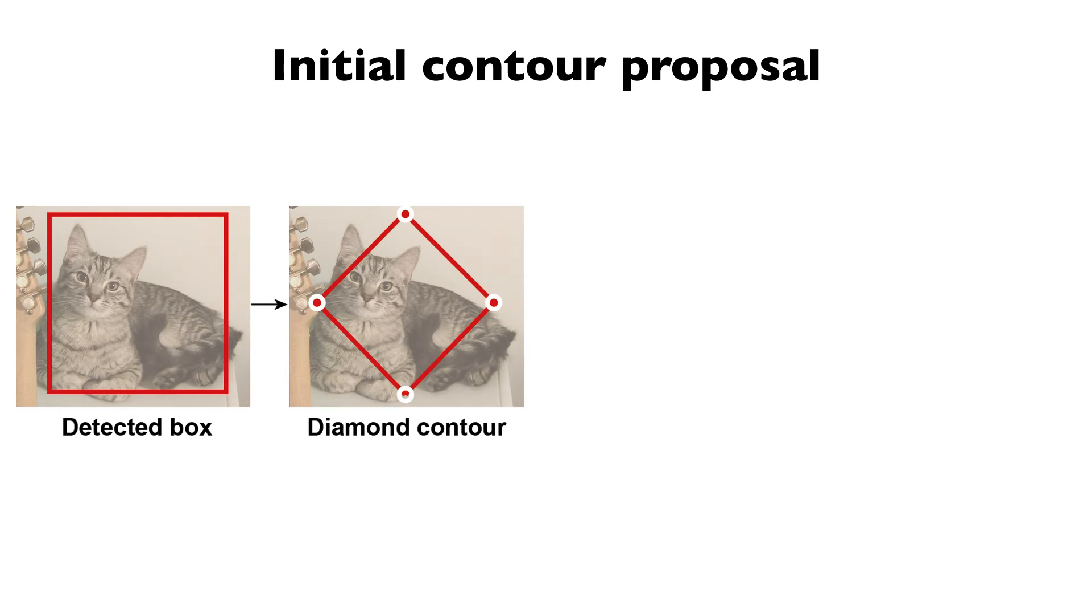Specifically, given a detected object box, we extract four center points at the top, left, bottom, and right box edges, which define a diamond contour. DeepSnake takes the diamond as input and outputs offsets that point from diamond vertices to object extreme points.